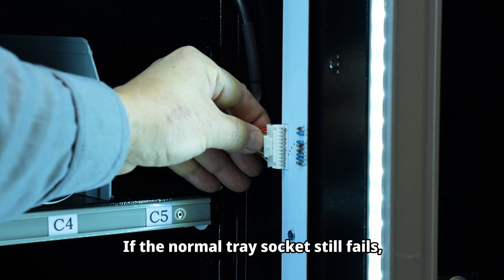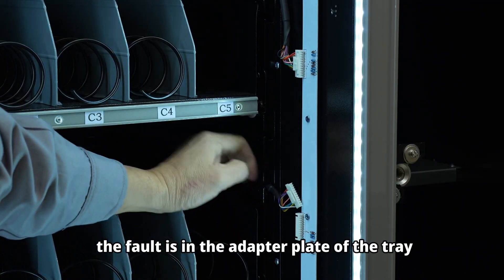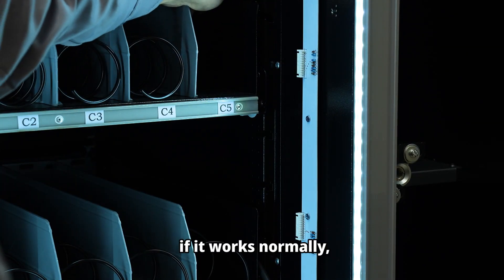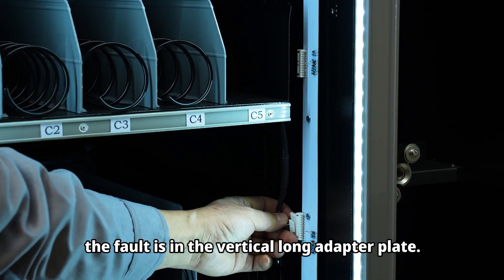If the normal tray socket still fails, the fault is in the adapter plate of the tray. If it works normally, the fault is in the vertical long adapter plate.